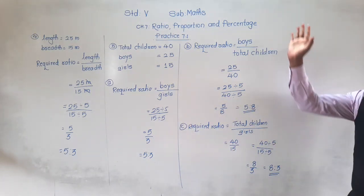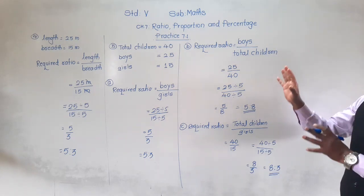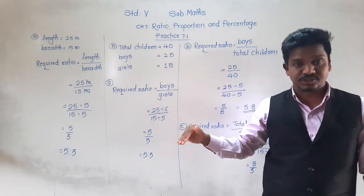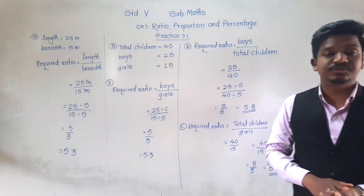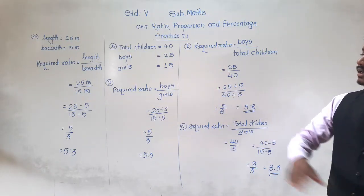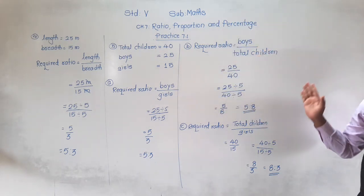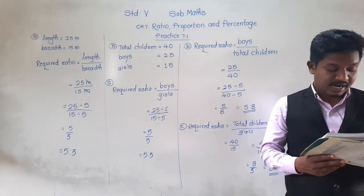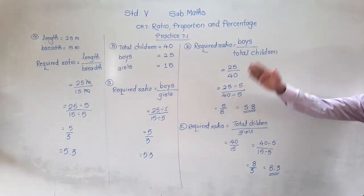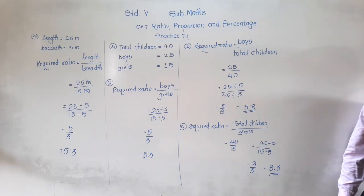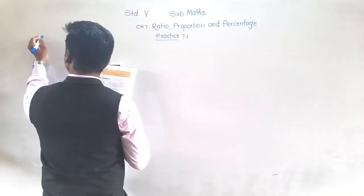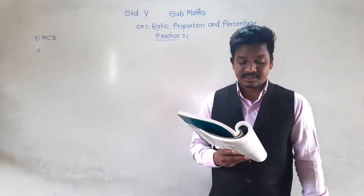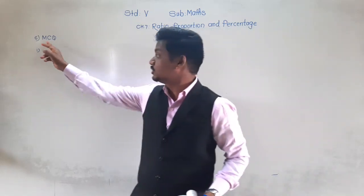So in this way we have to find the ratio of whatever they have asked, and we must follow the sequence. If they ask the ratio of boys to girls, we should not write girls to boys — follow only that sequence. Now pause this video, write these two word problems in your notebook. Next, question number 6 is multiple choice questions — MCQ means multiple choice question, where a question is given with four options and one option is correct.